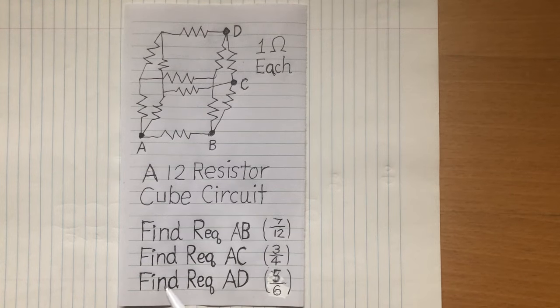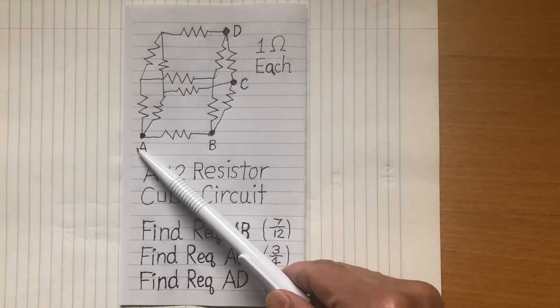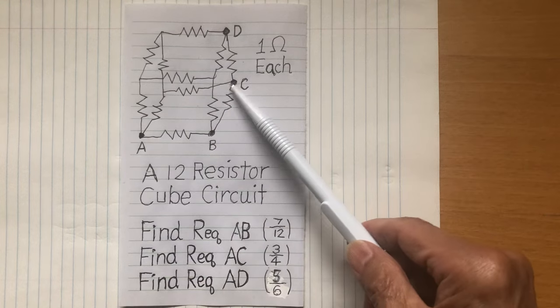What is the equivalent resistance between terminals A and C? What is the equivalent resistance between A and C?